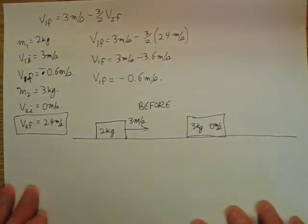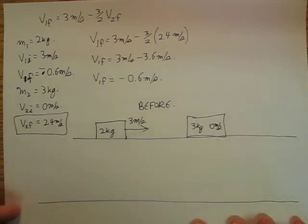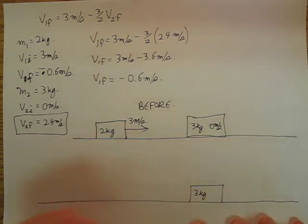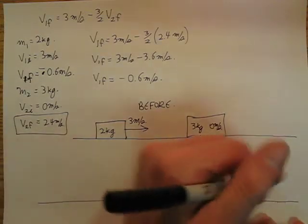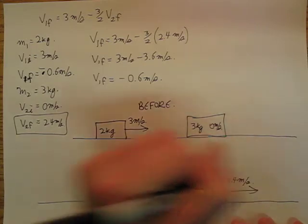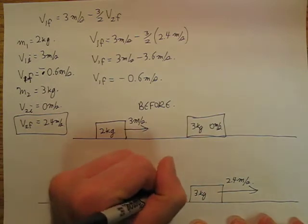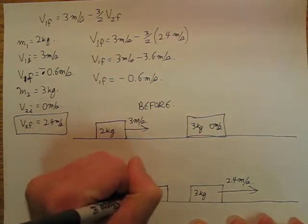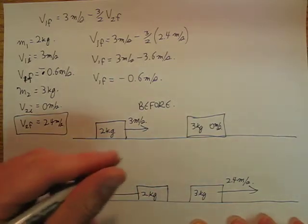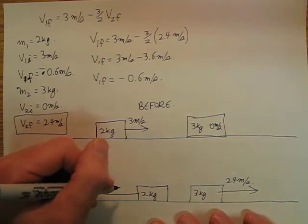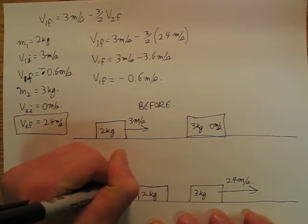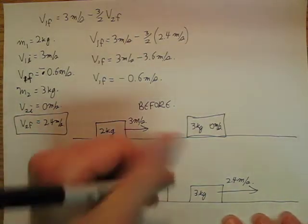And so in my after picture, afterwards I have my 3 kilogram block is now going to be moving this way at 2.4 meters per second, and then my 2 kilogram block is going to strike it and bounce off, and it's going to be heading back that way at negative 0.6 meters per second. So this is after.